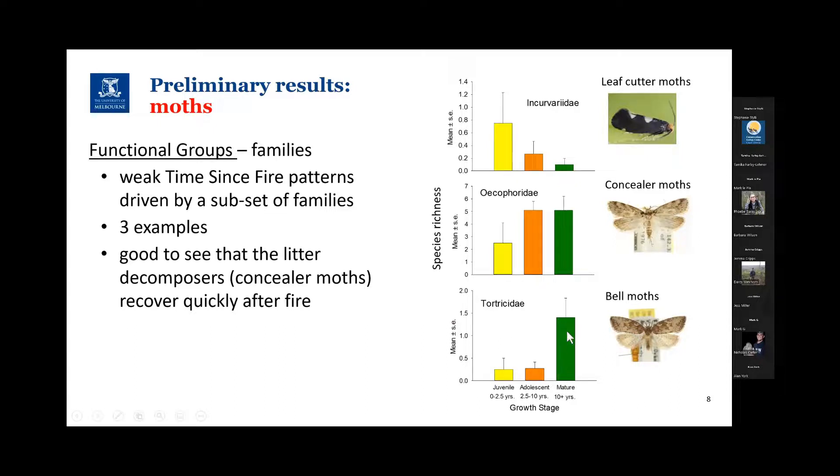We have a group at the bottom, the bell moths, where they're most species rich in the older forests. And we have a group in the middle, the concealer moths, that have sort of transitioned. Just to illustrate some of the patterns in the data, this group of moths, the concealer moths, their larvae are very heavily involved in decomposition of leaf litter.